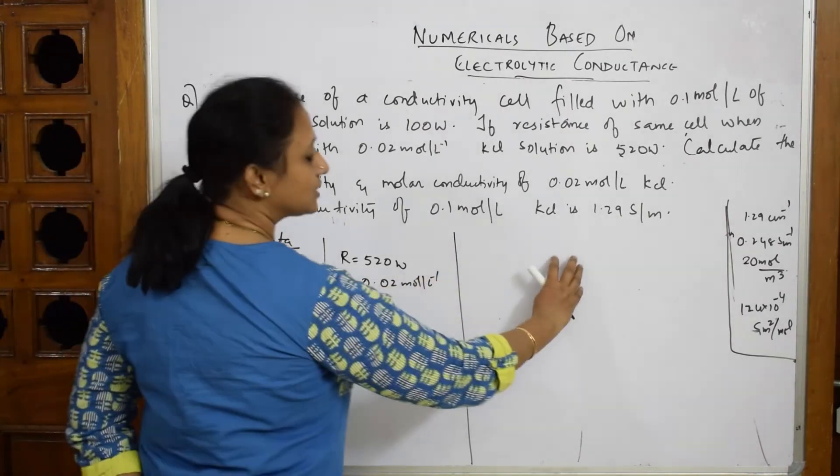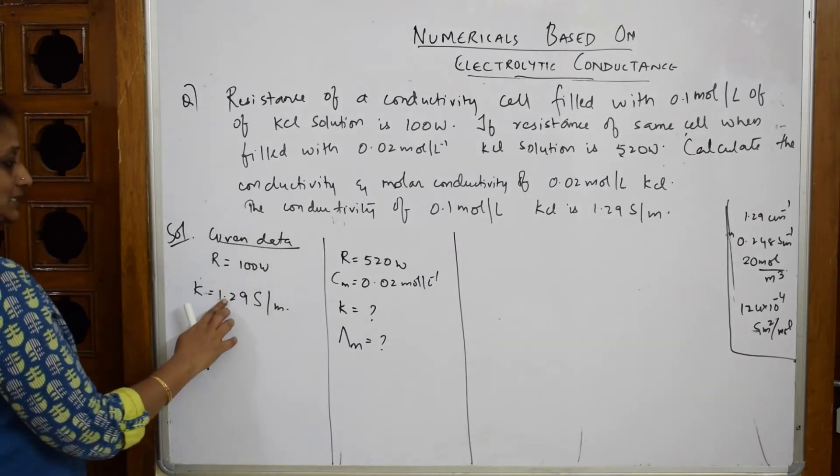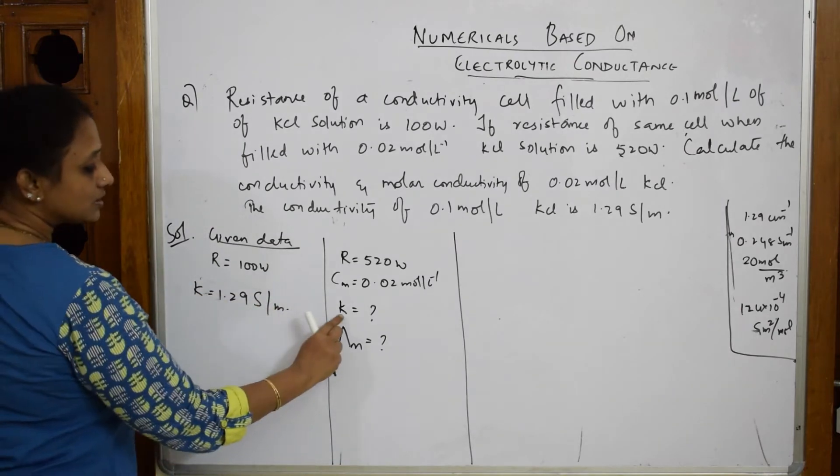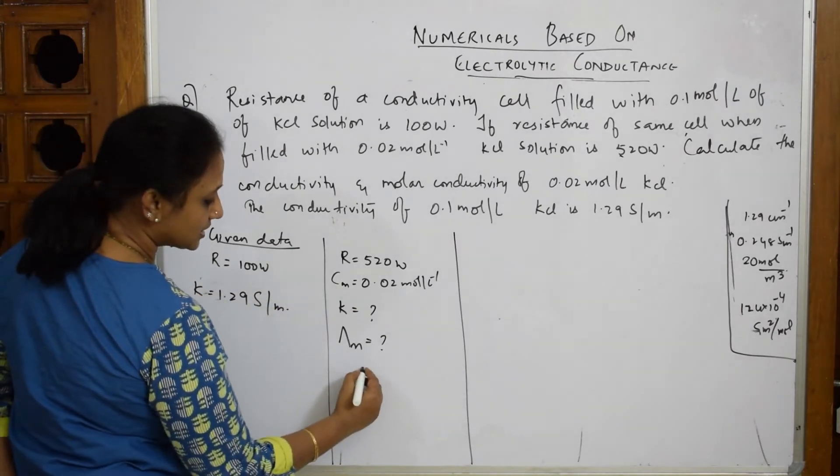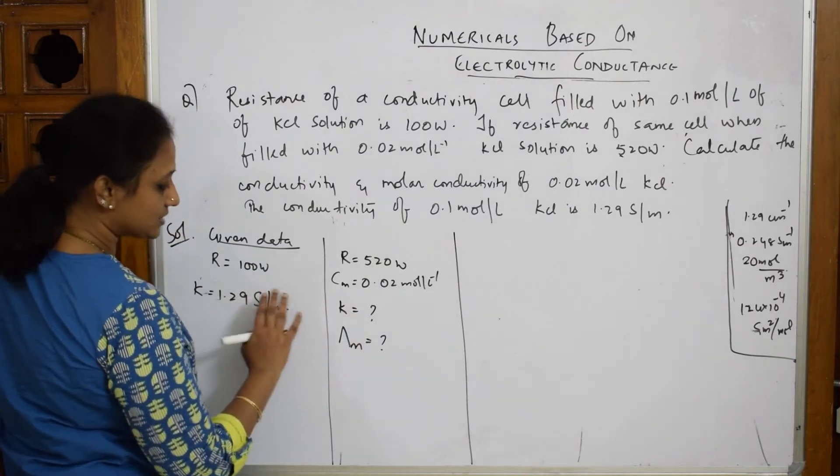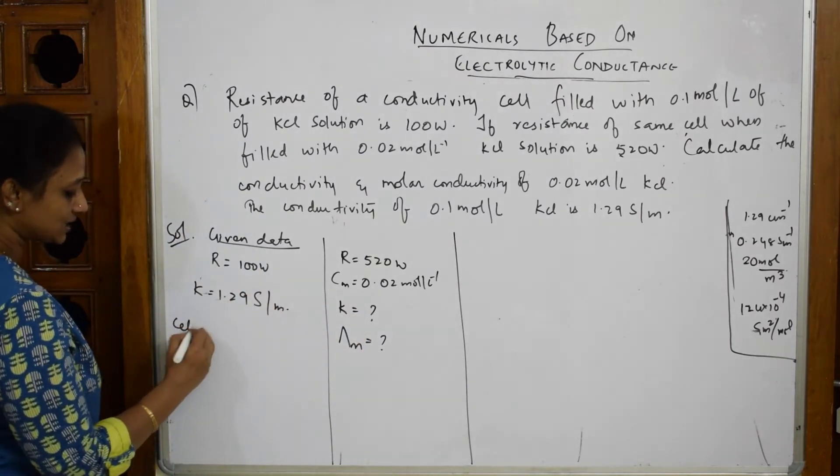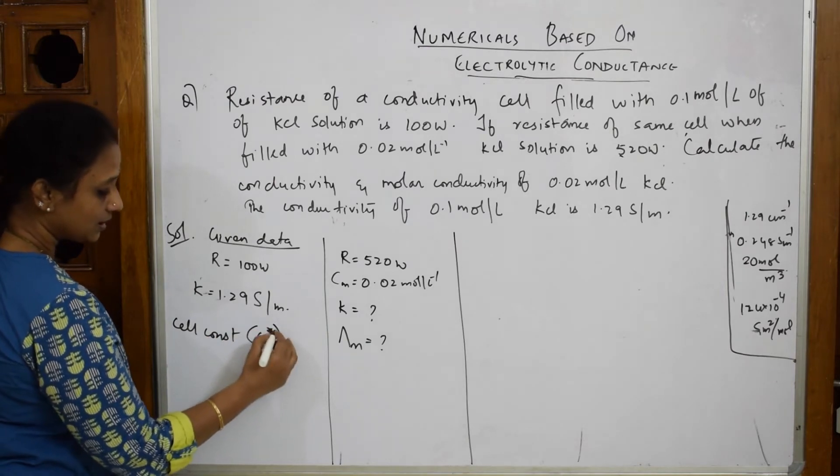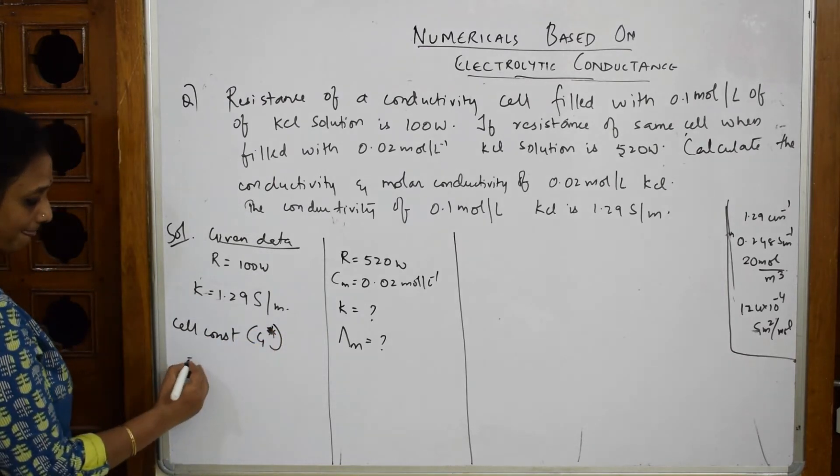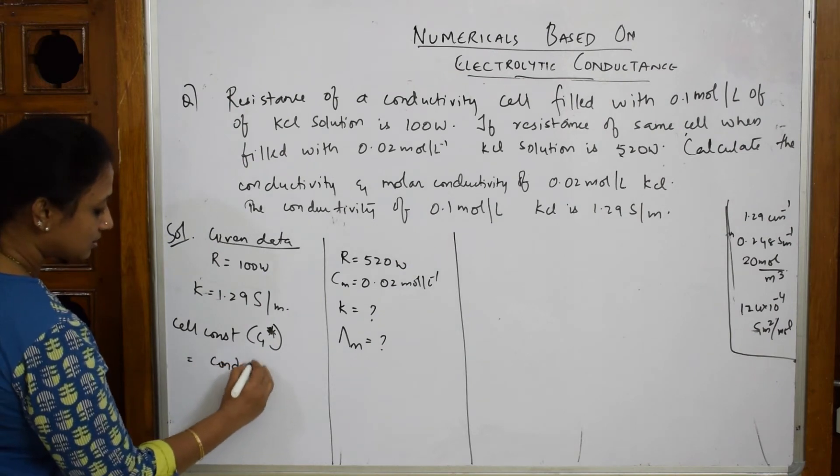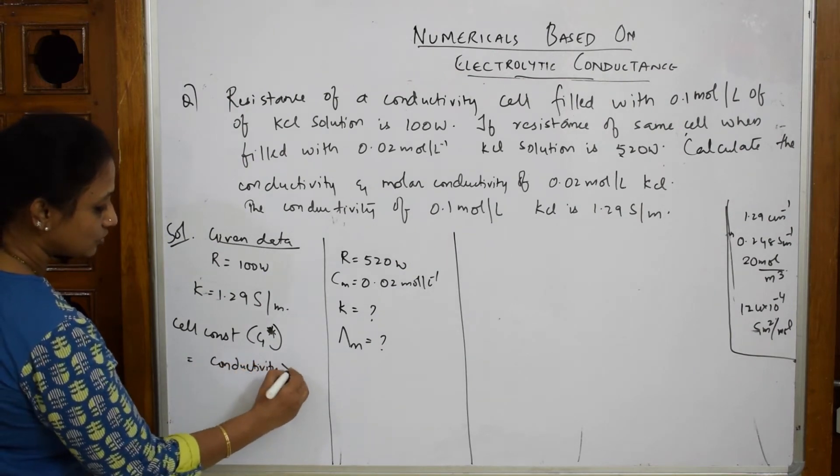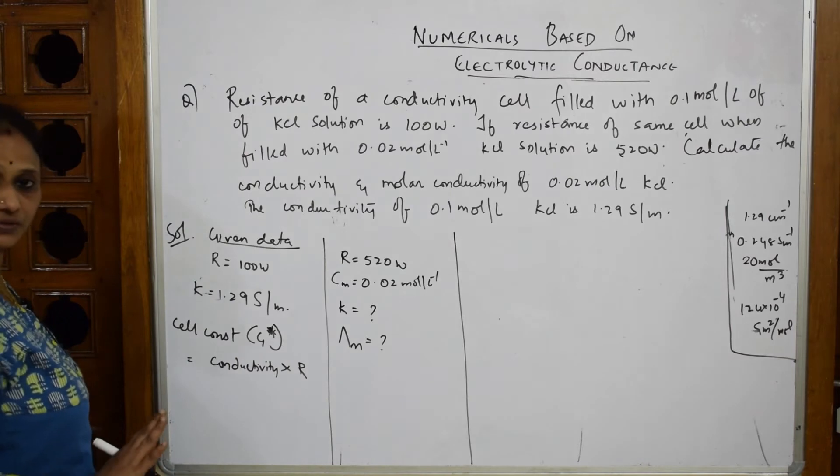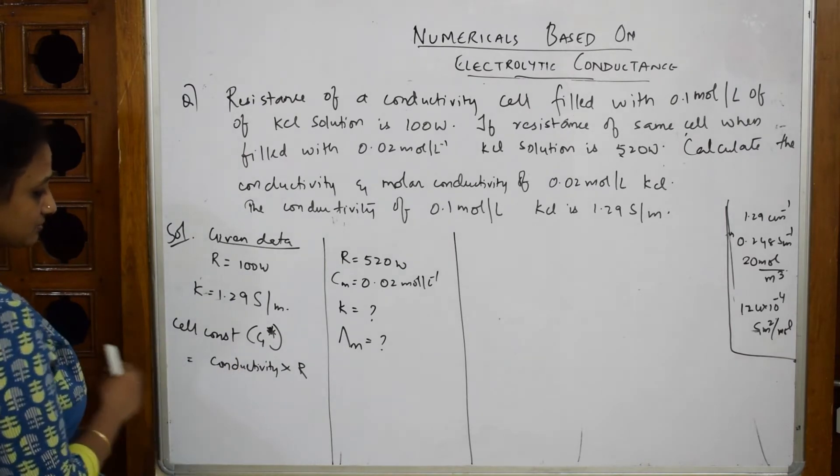From this data, what is the formula? The cell constant G* is related to conductivity. We know that cell constant G* equals conductivity times resistance.